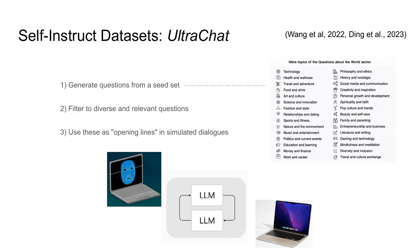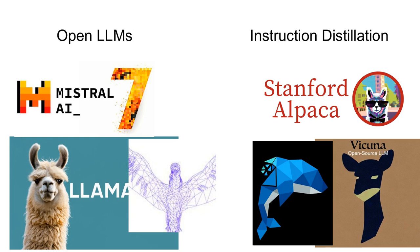You then use the language model to filter this grouping to a diverse set of relevant questions. These questions act as the opening lines in a simulated dialogue. In this dialogue, you have a large language model play both the questioner and the respondent, going back and forth over several turns discussing the topic of interest. Researchers figured out that if they use these self-instruct datasets, they could then train one of these open-sourced raw large language models to perform well on general instructions.